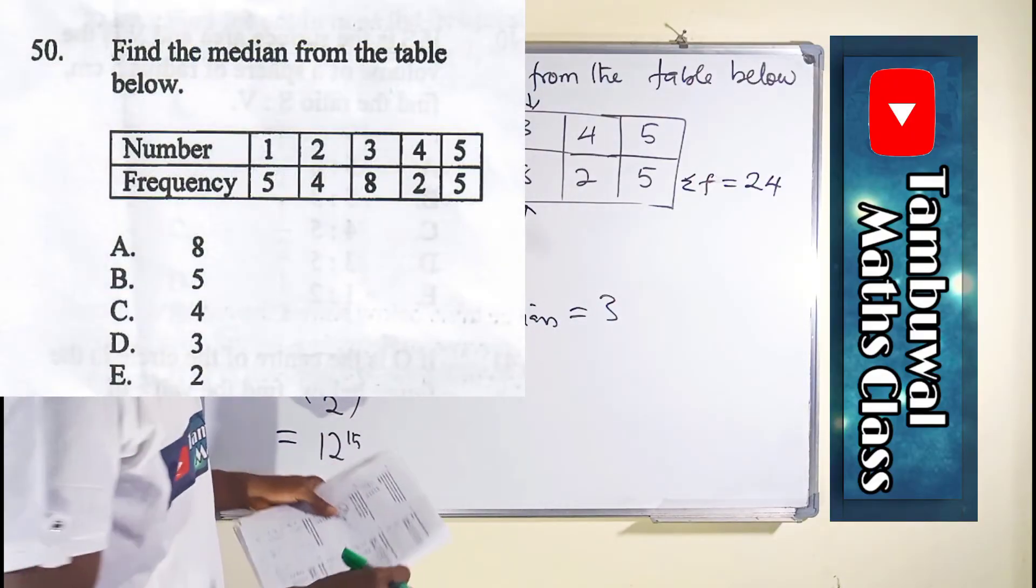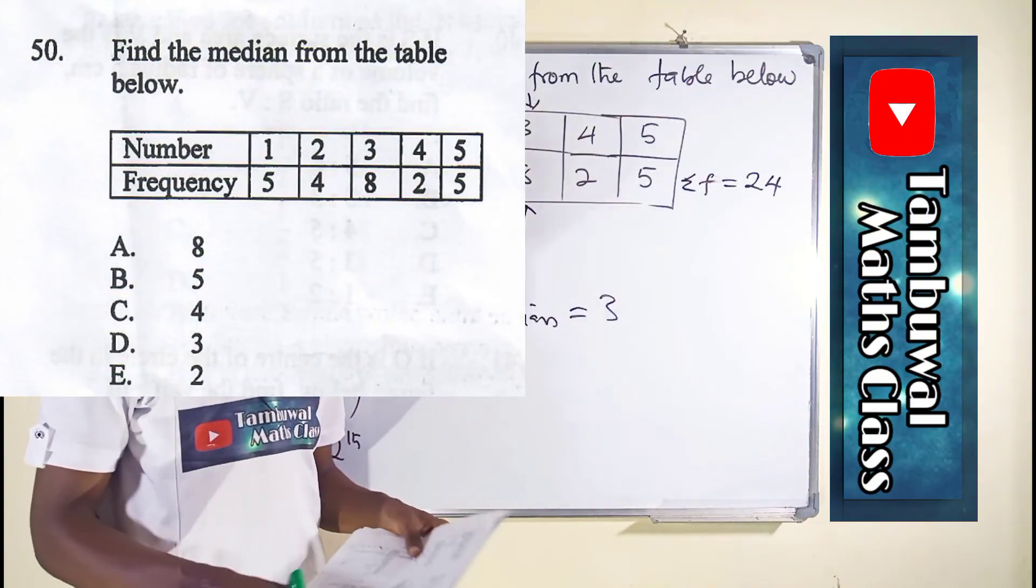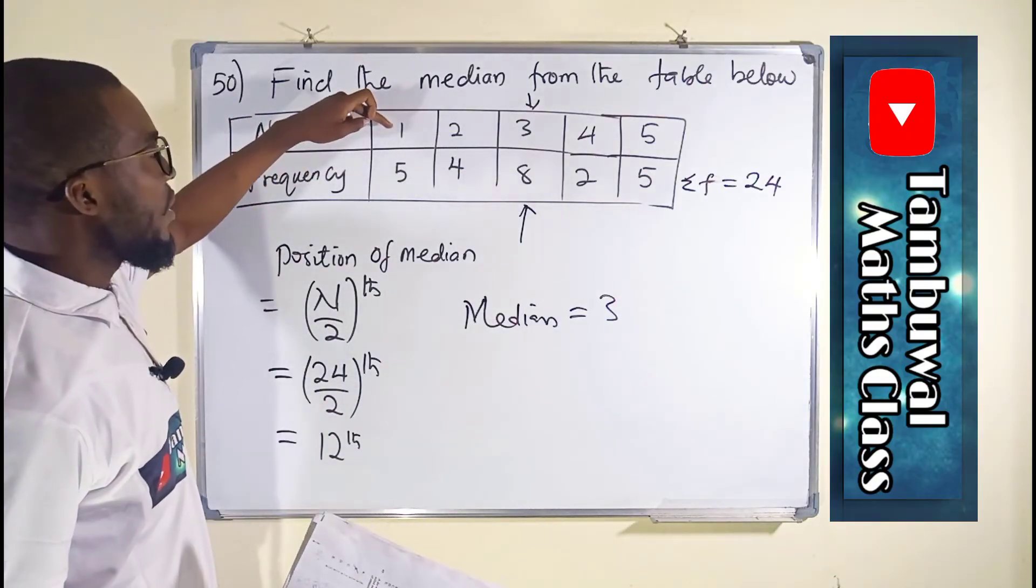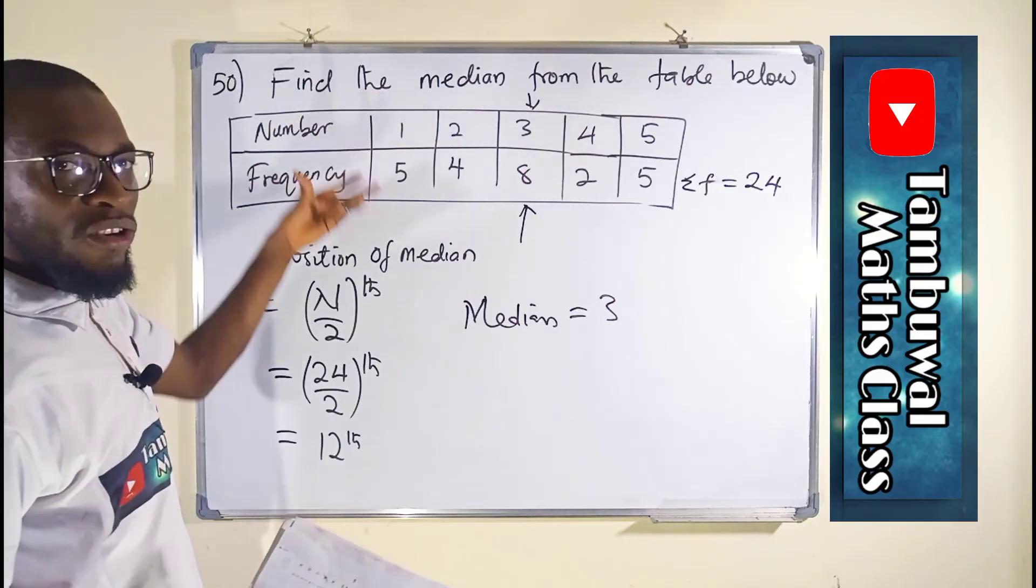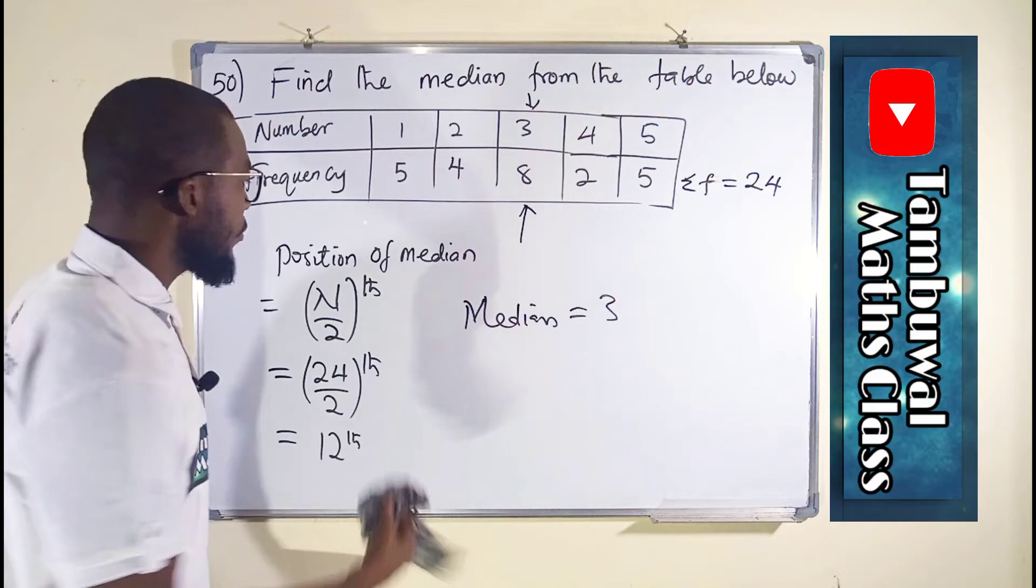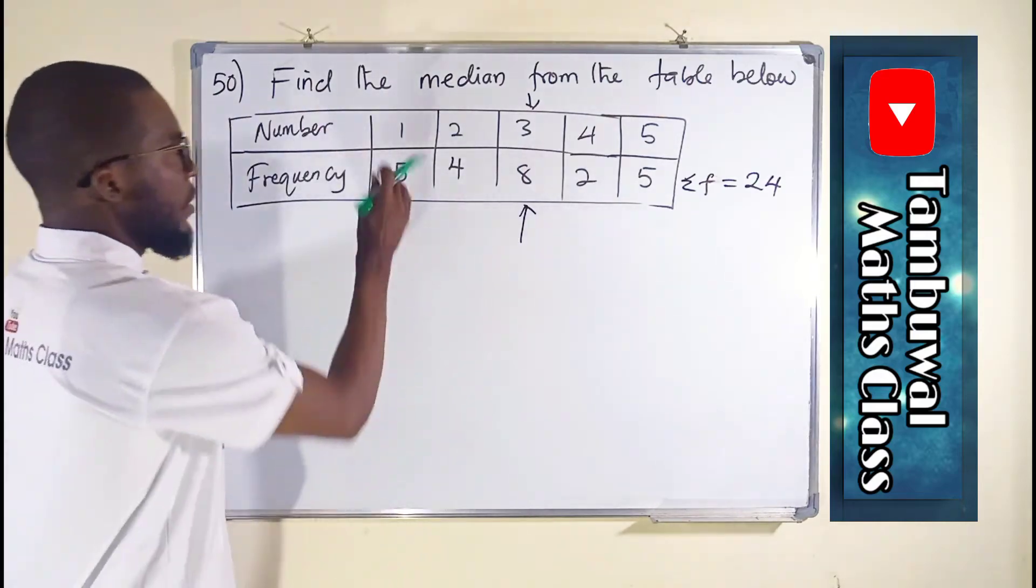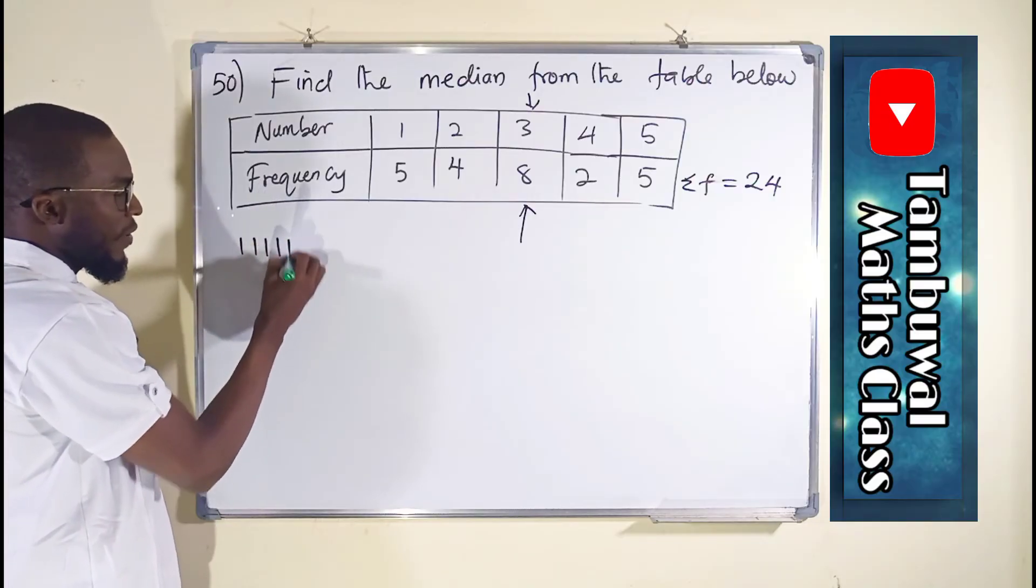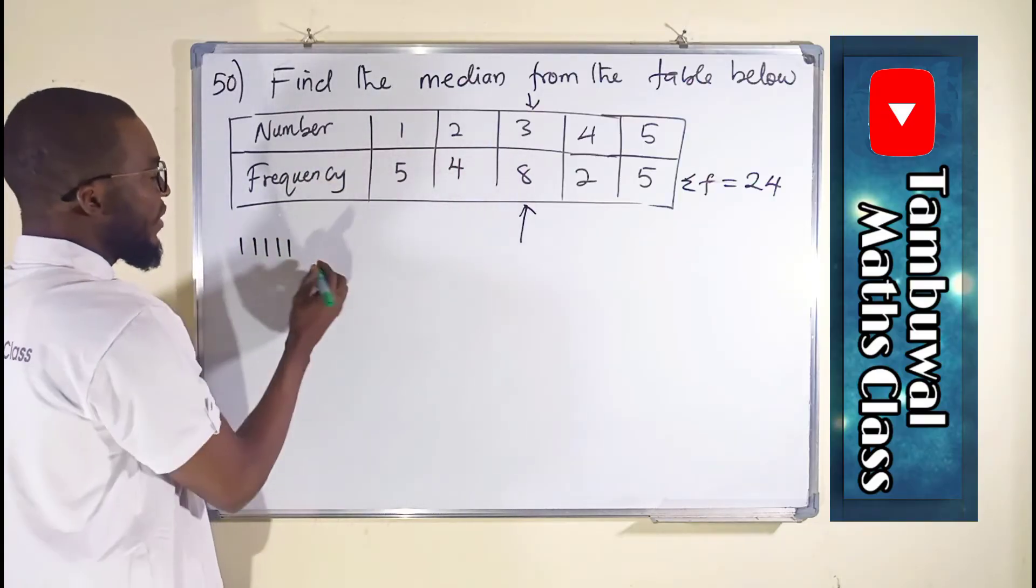Another way you can do it, which is kind of tedious, is to arrange these numbers according to their frequency. Let me show you. 1 we have 5 of them, so we say 1, 2, 3, 4, 5. The number 2 we have 4 of them: 1, 2, 3, 4.